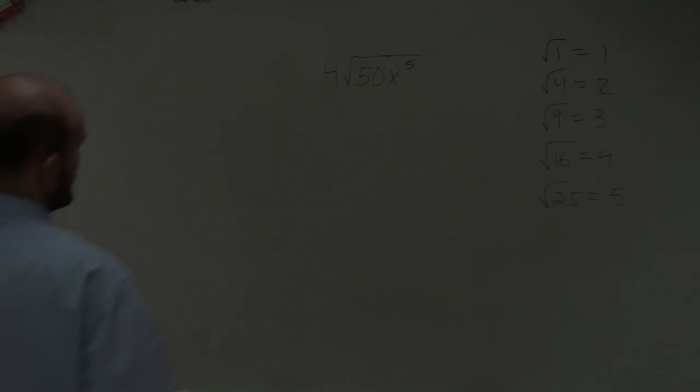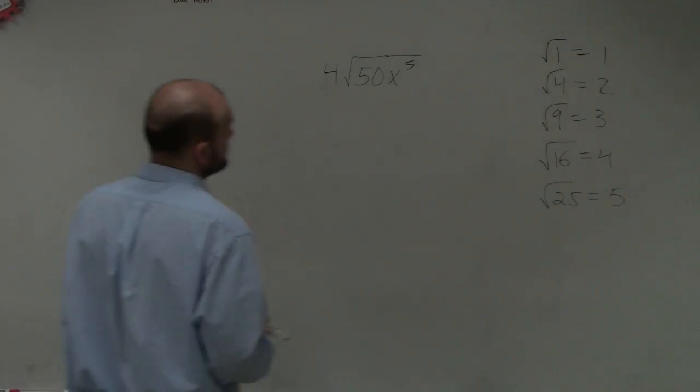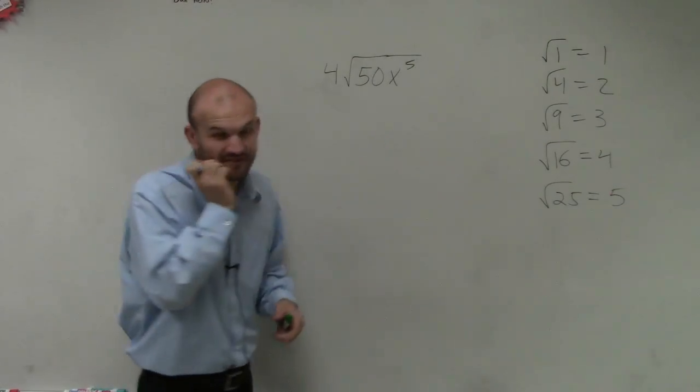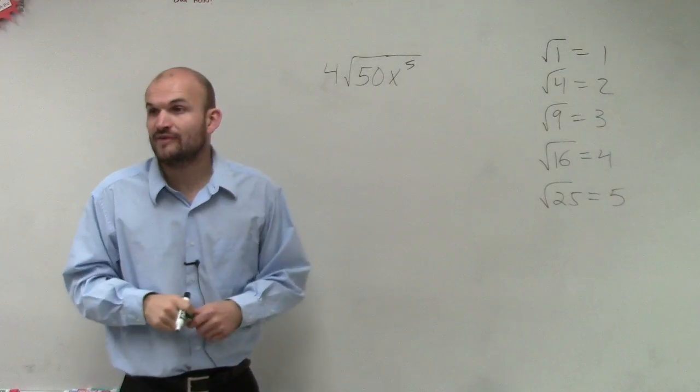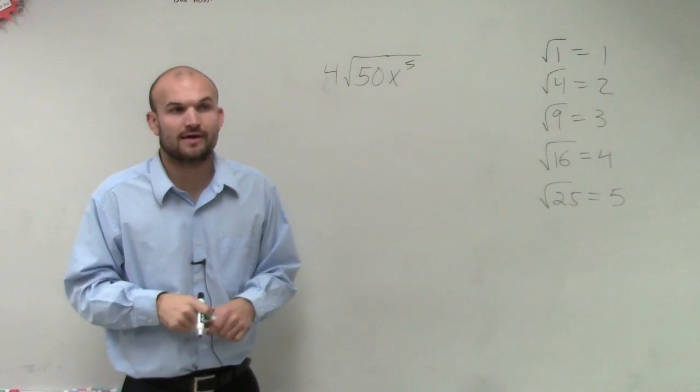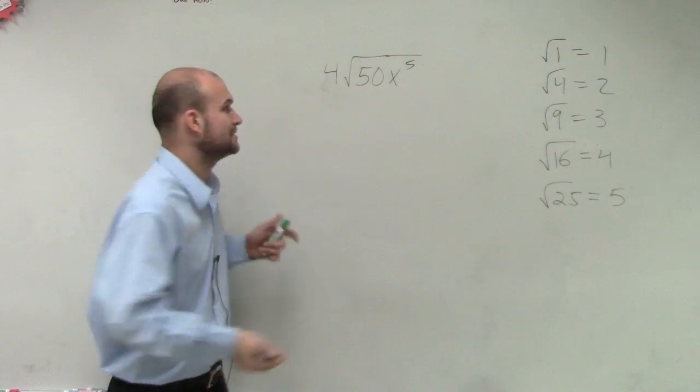We have 4 times the square root of 50 times x to the fifth power. Let's go ahead and follow through with what we have with our multiplication.